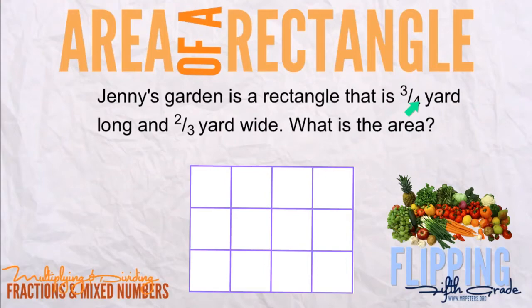Jenny's garden is a rectangle that is three-fourths of a yard long by two-thirds yard wide. So what is the area? Well, right here we can see that this is three-fourths yard and this one over here is two-thirds.